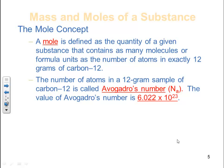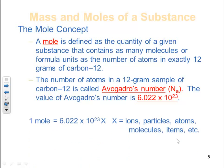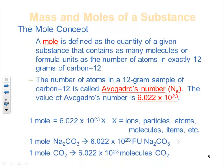Avogadro's number is a quantity for comparing things — it's kind of like a dozen, except a mole means 6.022 × 10²³ items: ions, particles, atoms, molecules, apples, bananas — whatever. One mole of sodium carbonate equals 6.022 × 10²³ formula units of sodium carbonate. Or for a molecular species, one mole of CO₂ equals 6.022 × 10²³ molecules of CO₂.